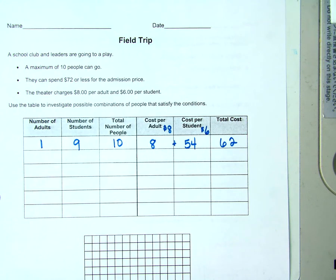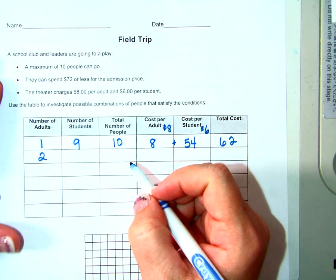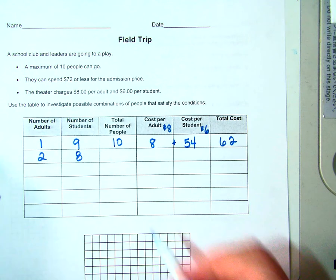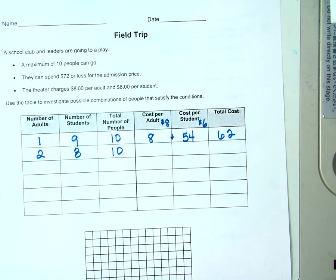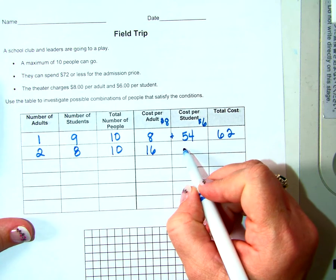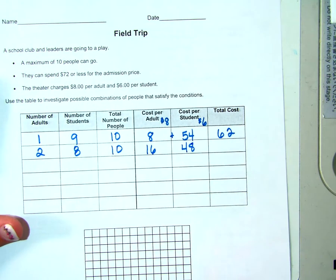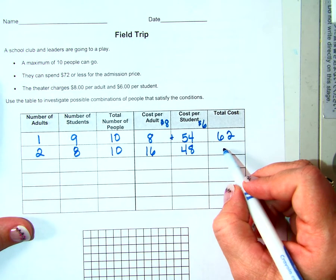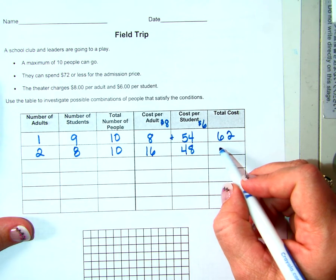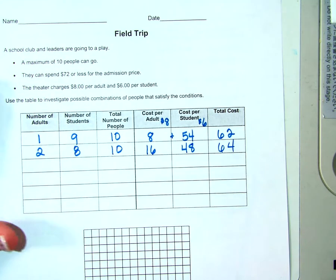How many adults are going? Two adults. Eight students. How many people are going? Ten people are going. We know it costs $8 per adult. How much is it going to cost for the adults? $16. How much is it going to cost for the students? $48. What's the total cost? $64. Does that work?